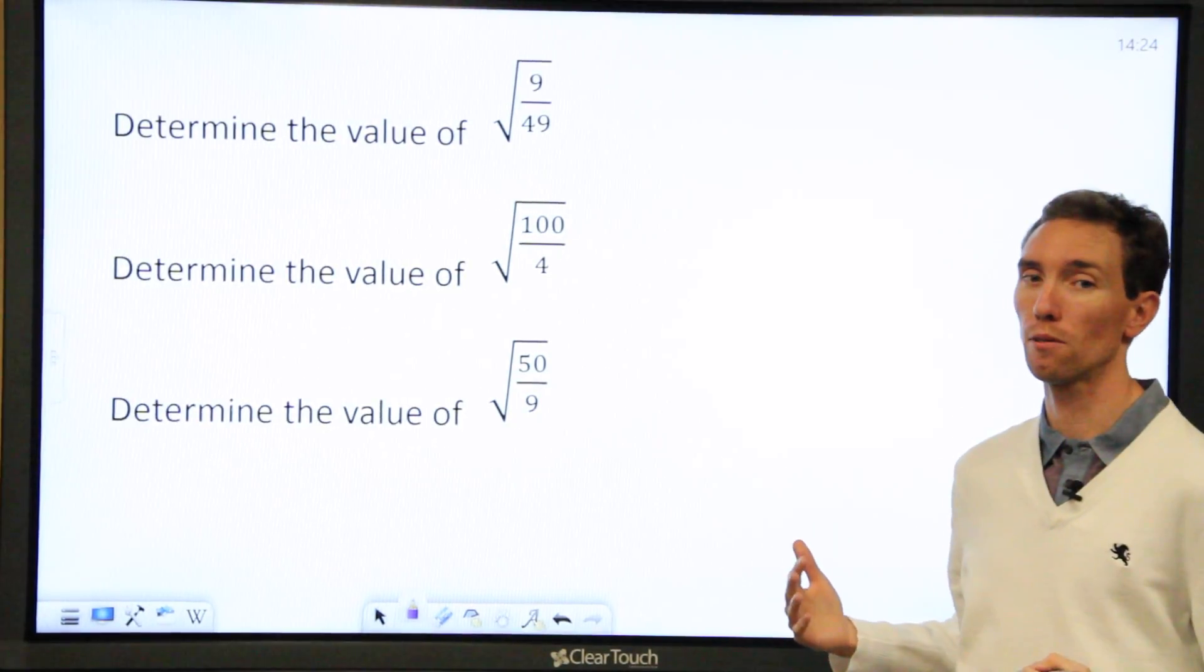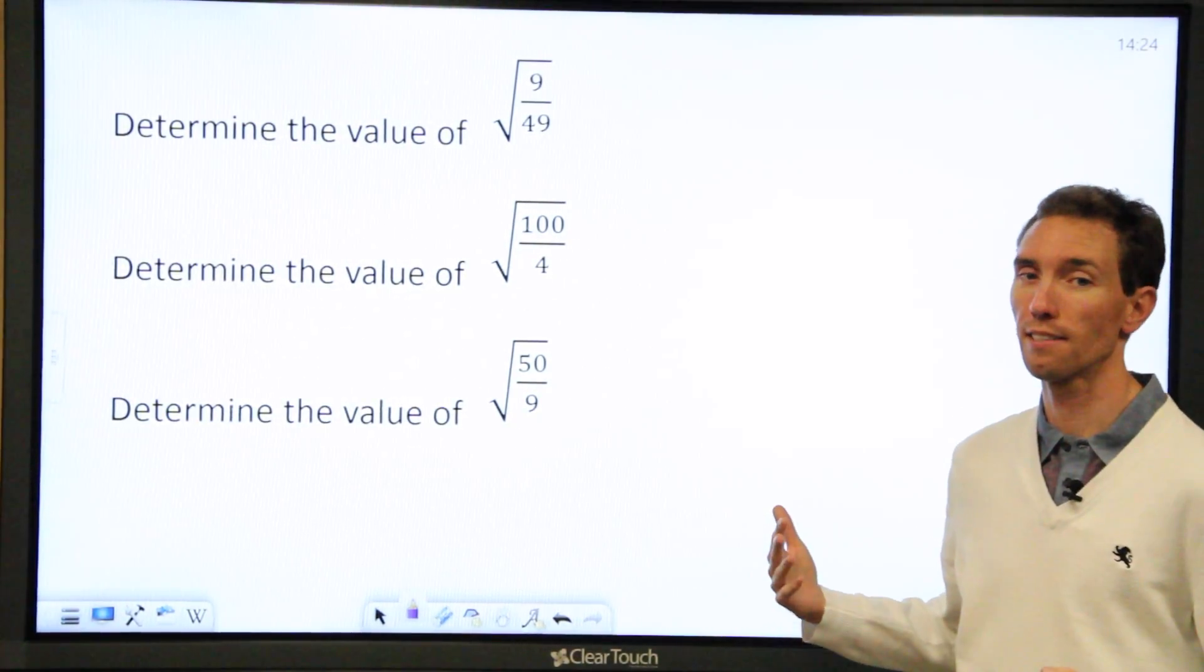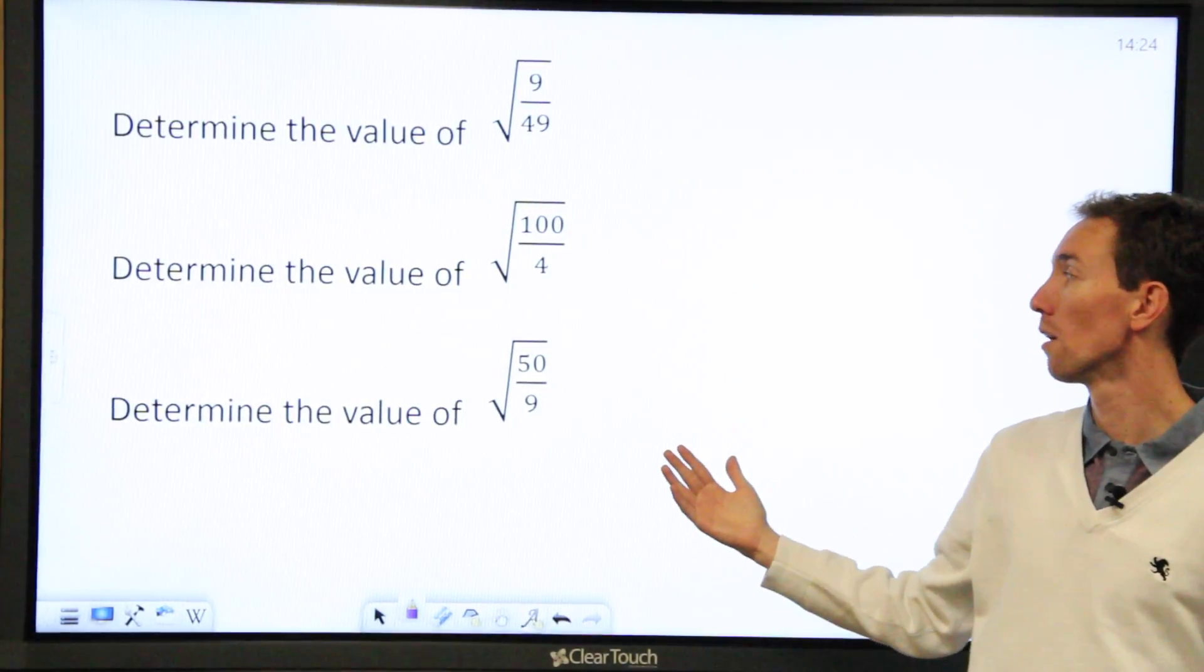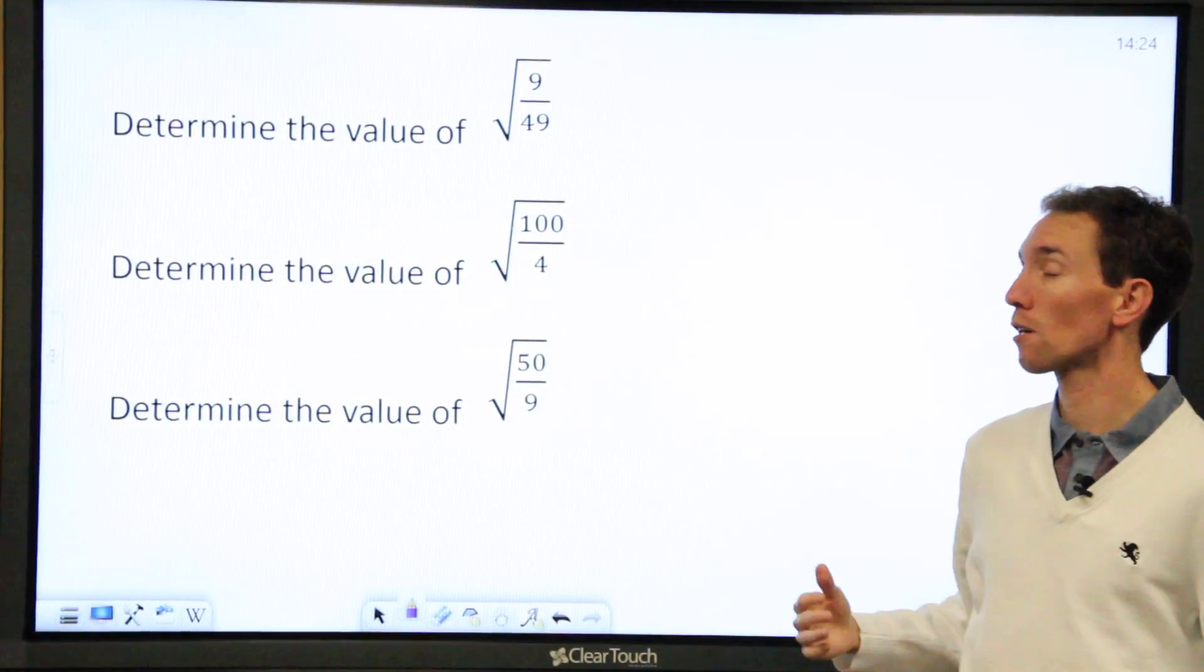So I want to go through a couple of examples and explain how you can simplify radicals and determine the value of these types of problems. So let's start with the first one.